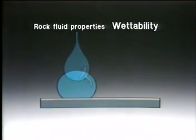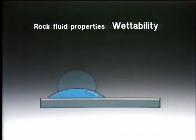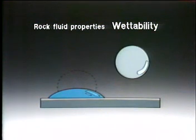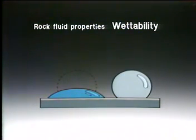Thus we say that water wets a glass surface because it spreads out on contact, whereas mercury does not wet the glass because it tends to bead up on that surface.